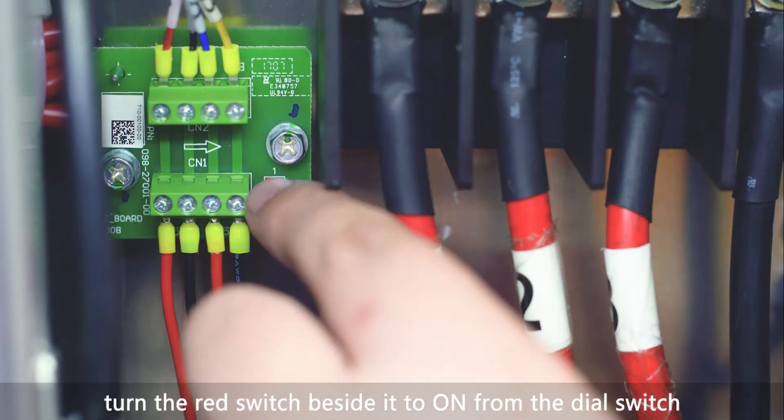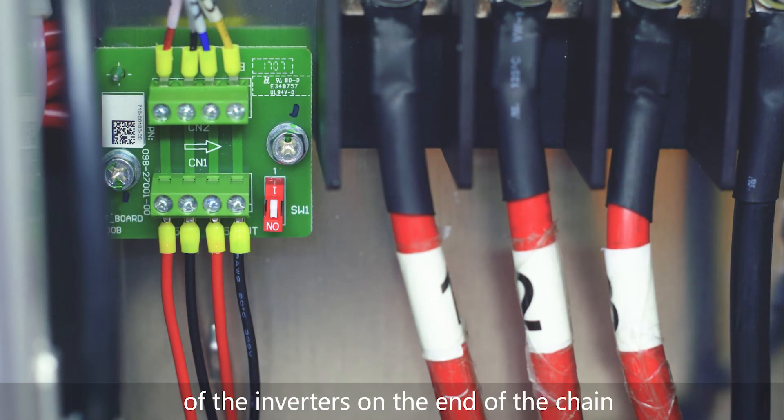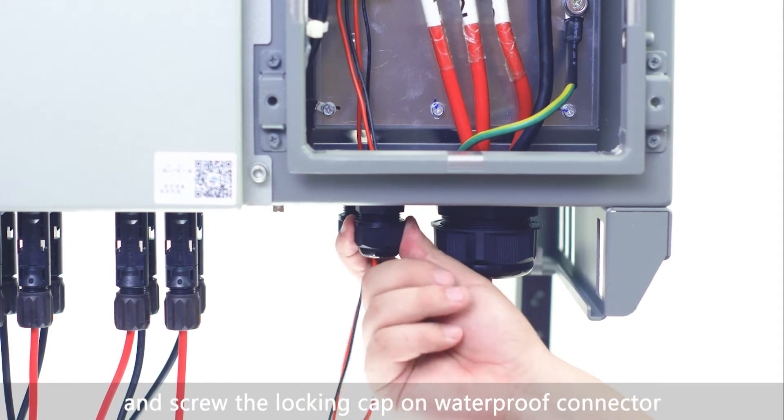Turn the red switch beside it to ON from the dial switch of the inverters on the end of the chain, and screw the locking cap on waterproof connector.